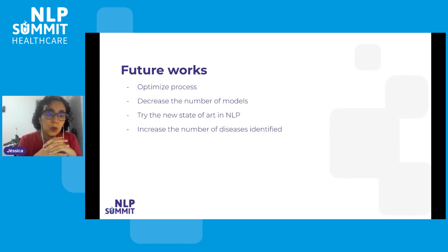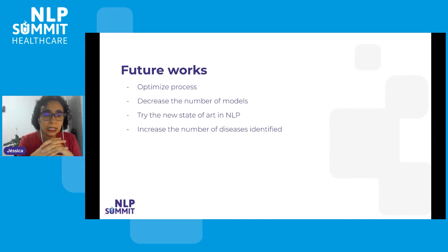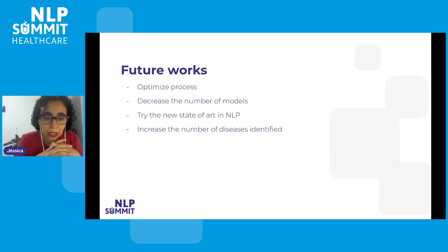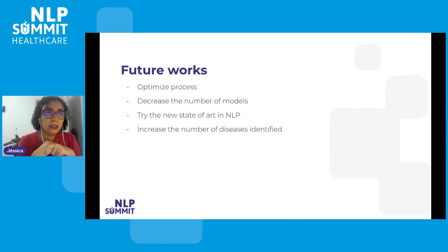For future work, we intend to optimize the process even more because we have more clients, more texts to process, and more diseases to identify. Mainly, we want to decrease the number of models we run — maybe ending with only one. We also want to try the new state-of-the-art in NLP with the new large language models that are available now, and increase the number of diseases we identify, which is currently around six or seven.